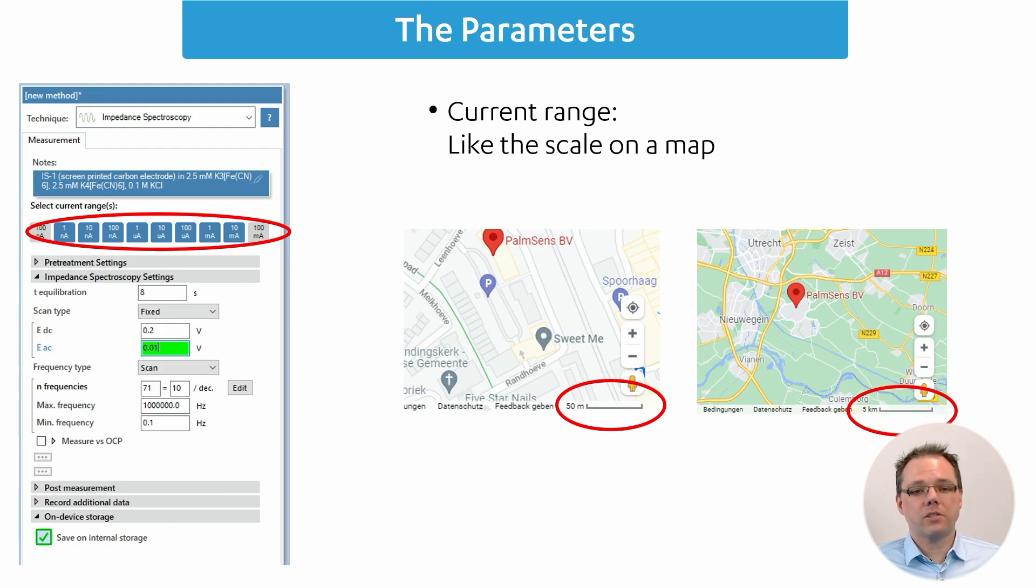The current ranges at the top work like for any other measurement technique that we have. Basically, the current ranges are like scales of a map. For example, we have this scale on the left side where this distance is 50 meters, and you can nicely see that the Palmsens headquarter is in this building and not in this building.